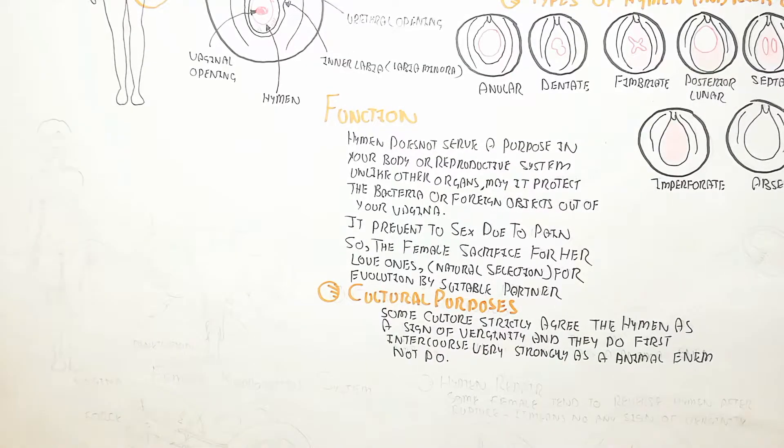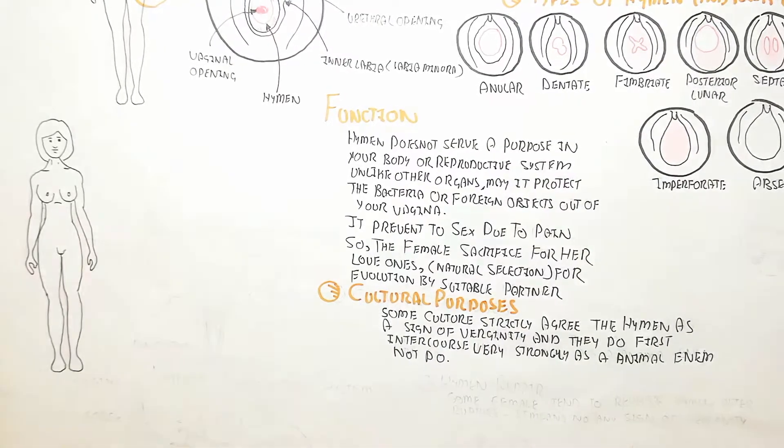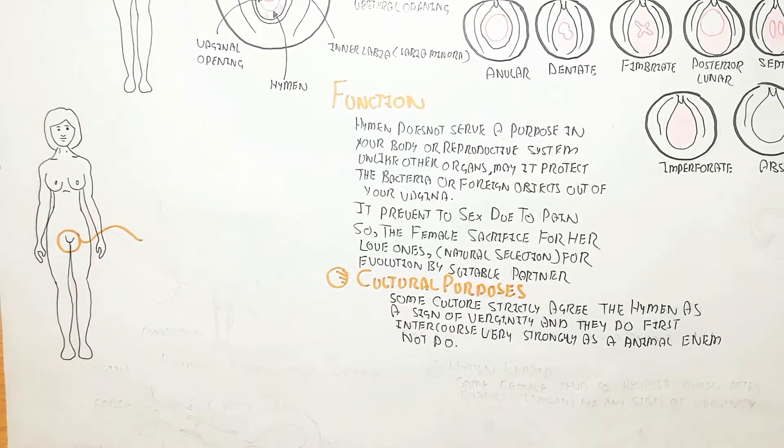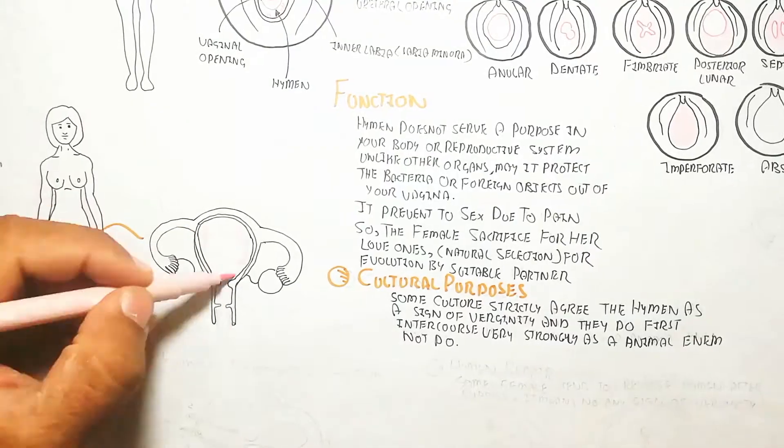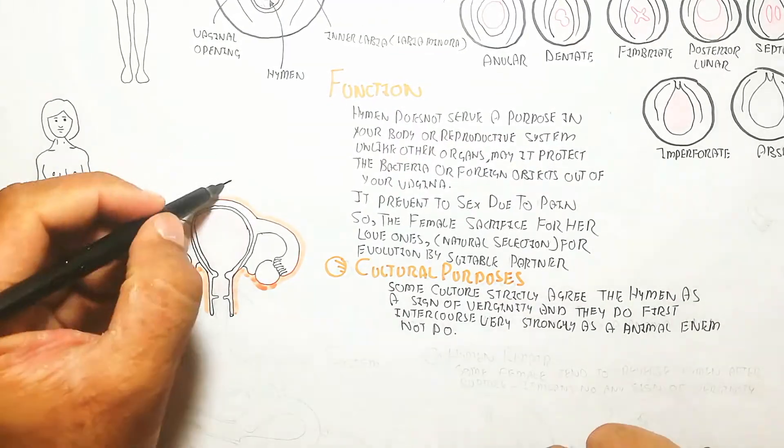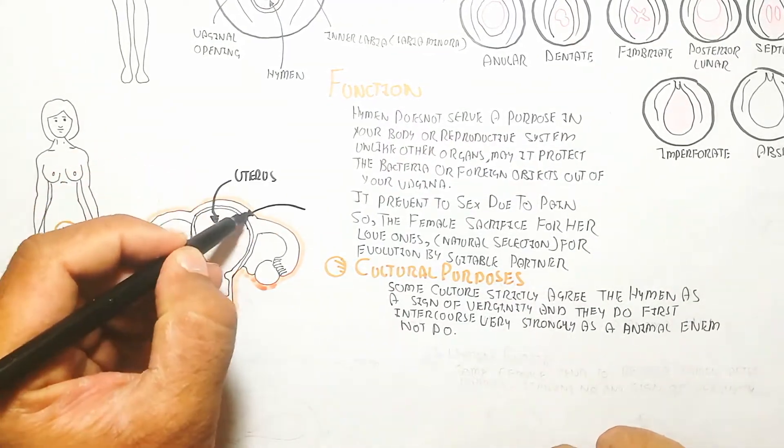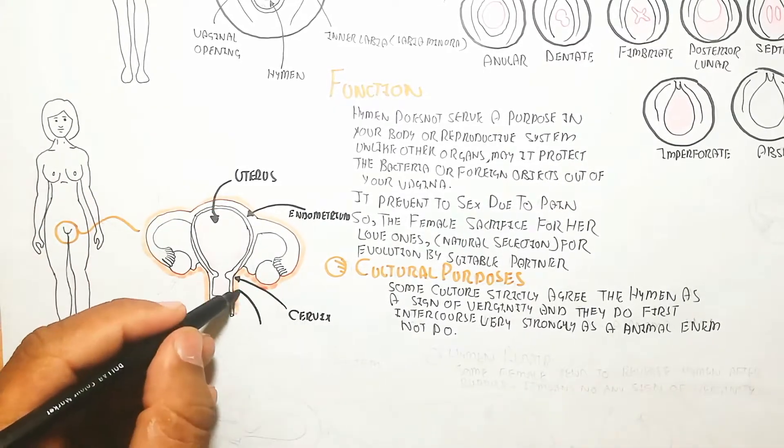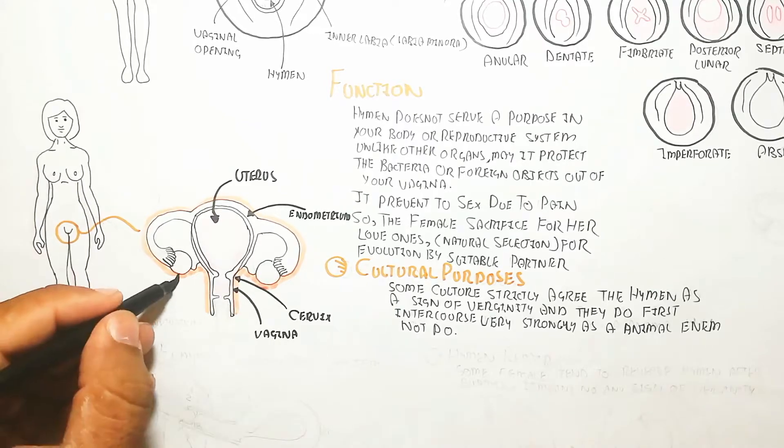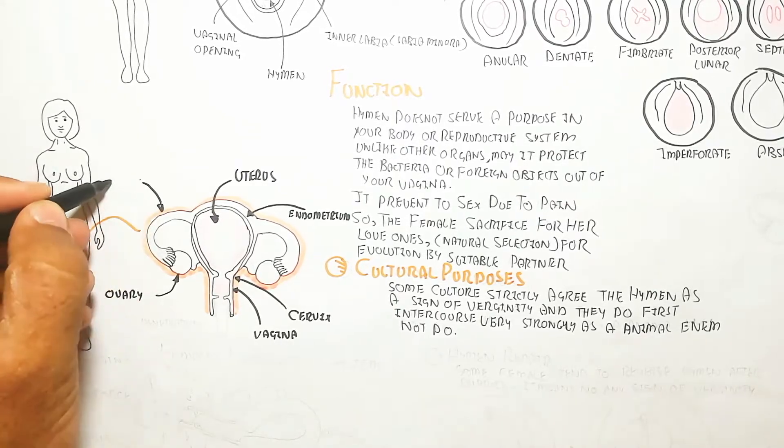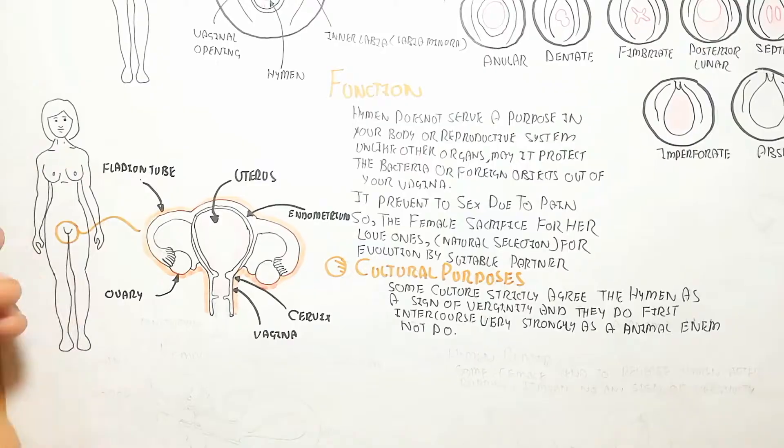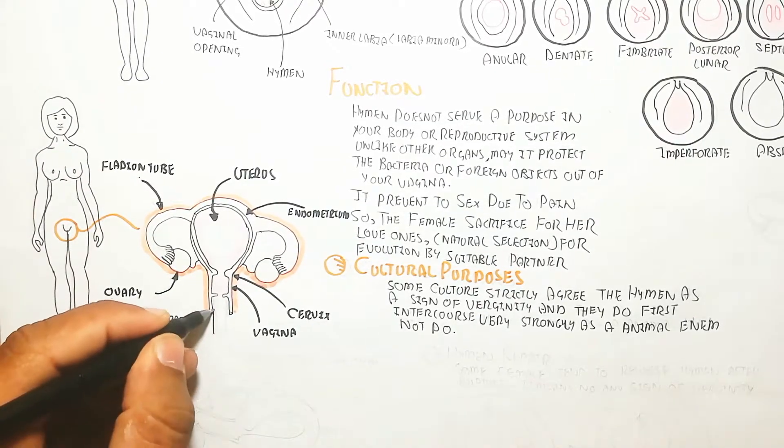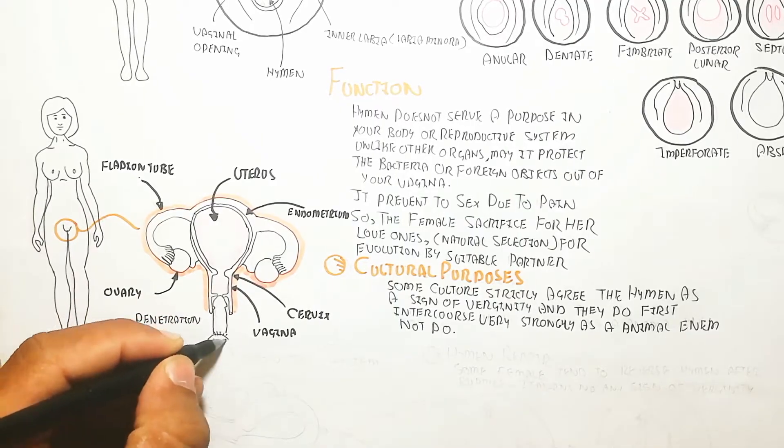Here is the female reproductive system again. These are two ovaries and two fallopian tubes. This is the uterus, and this is the endometrium, the wall of the uterus. This is the cervix, the opening of the uterus, and this is the vagina.